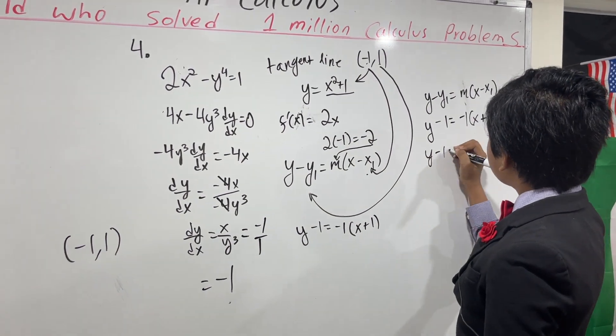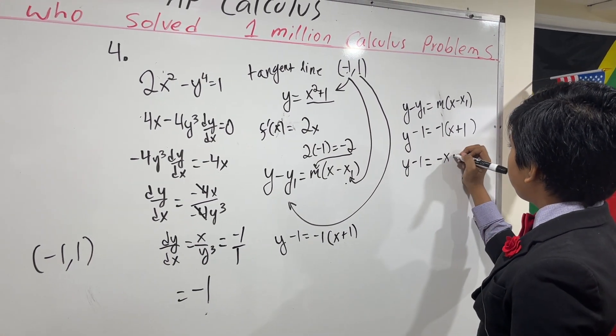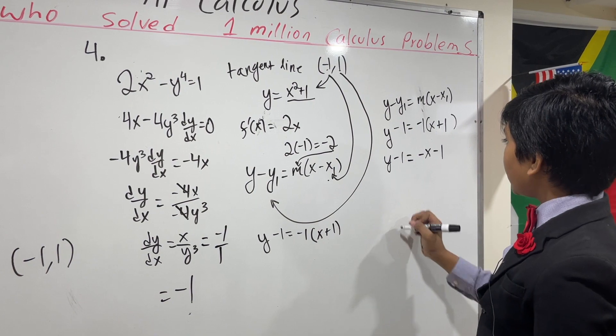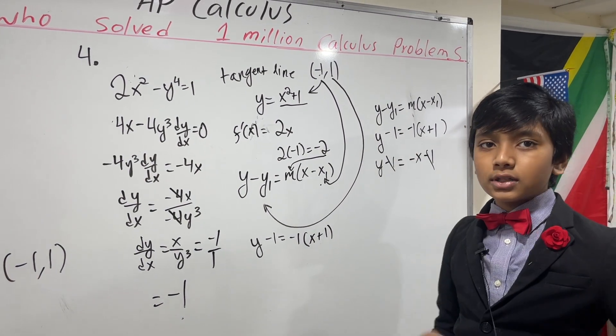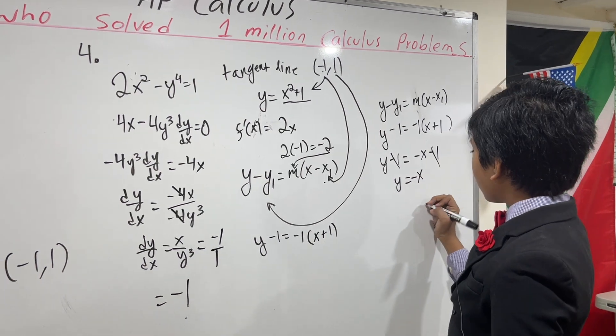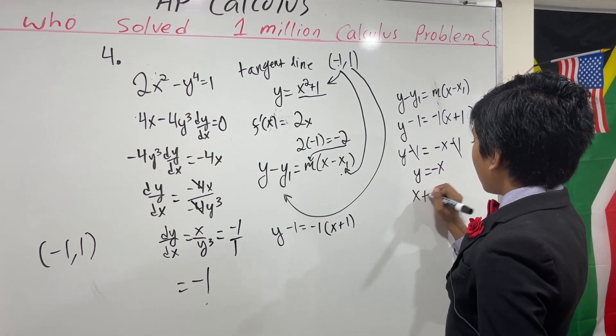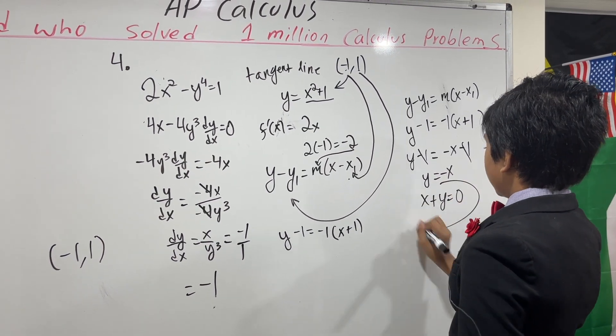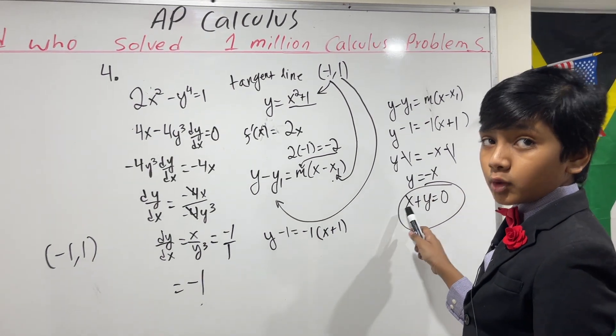So, this gives us y minus 1 is minus x minus 1. So, now, we can cancel out these minus 1s on both sides. We get y is minus x, or, in other words, x plus y equals 0 is our tangent line. That's how the answer choice is formatted.